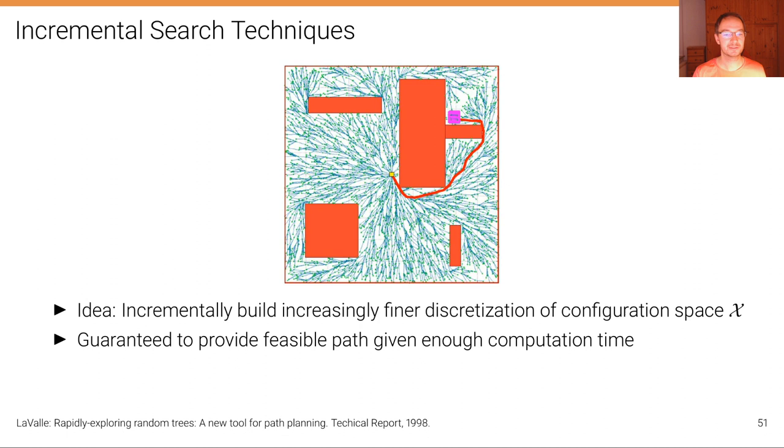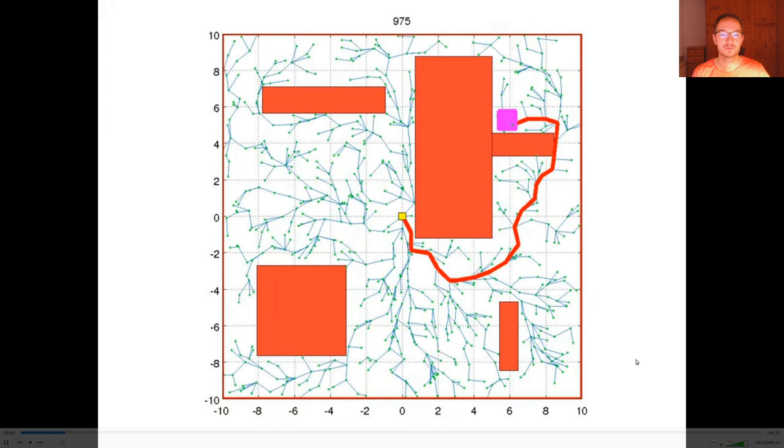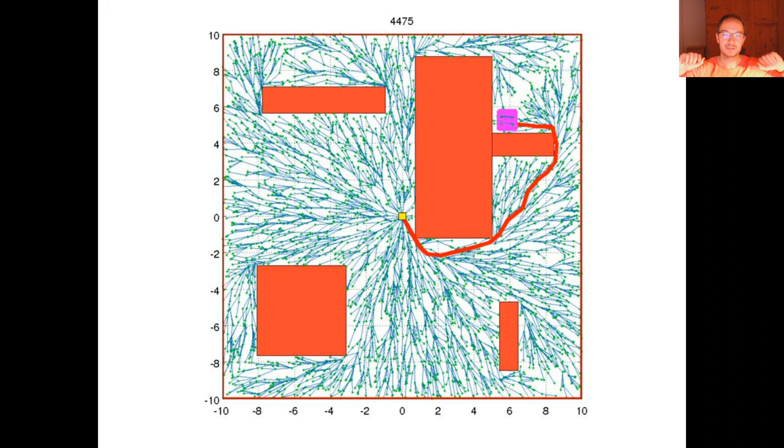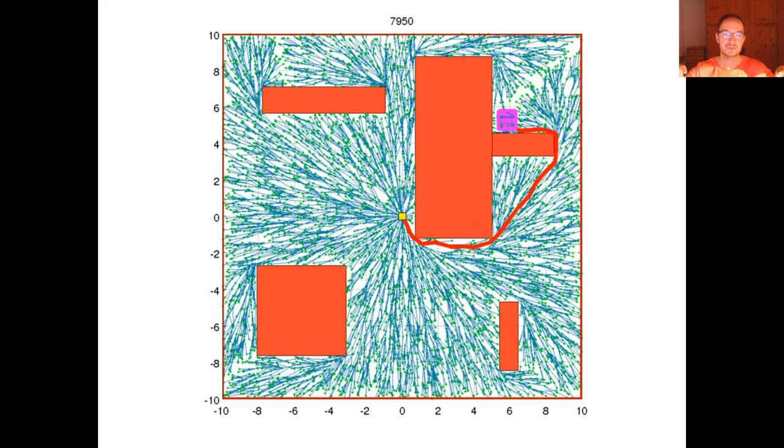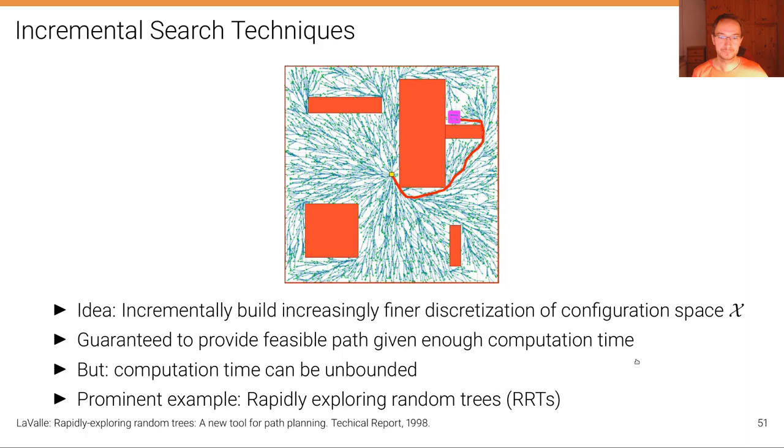Finally, there's also incremental search techniques where the idea is to incrementally build increasingly finer discretization of the configuration space x, which are guaranteed to provide a feasible path given enough computation time. However, the computation time can be unbounded. The prominent example of such algorithms here is the so-called rapidly exploring random tree algorithm, which is shown here. In the beginning it randomly explores the space and finds the coarse path to the goal, and then it much more densely samples the space in order to refine that path and make it better.